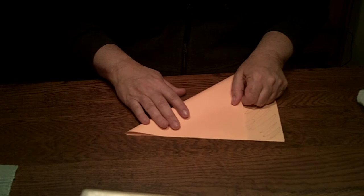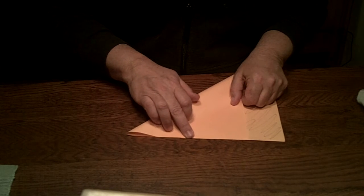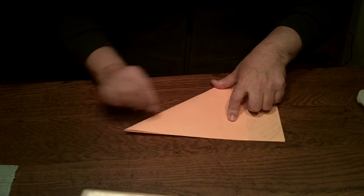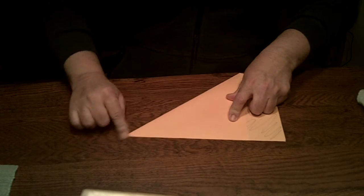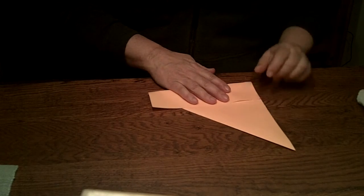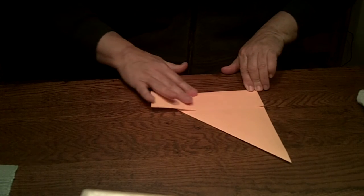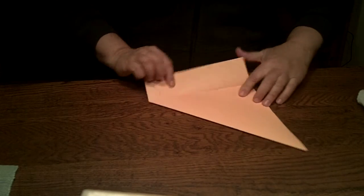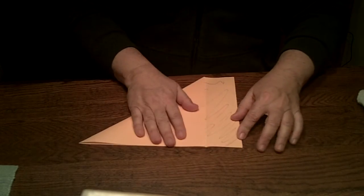And the best way to do that is to take this edge and line it up with this edge. You get a triangle there. And then take this edge and just fold it so that those two edges line up.